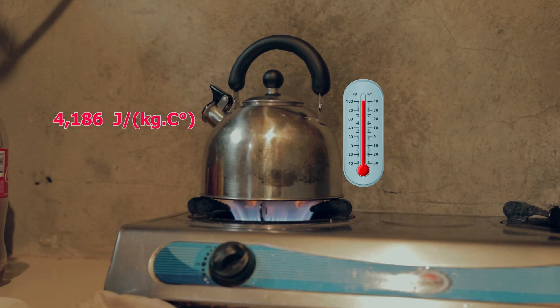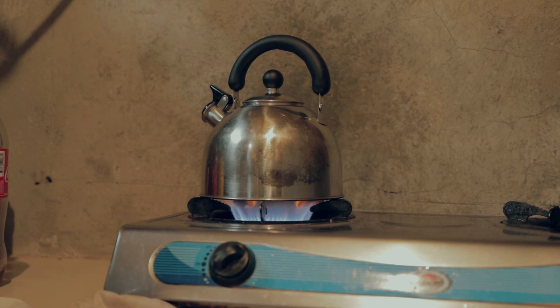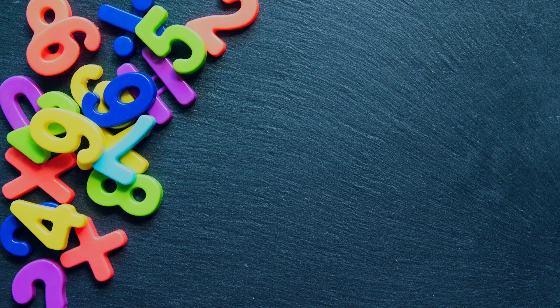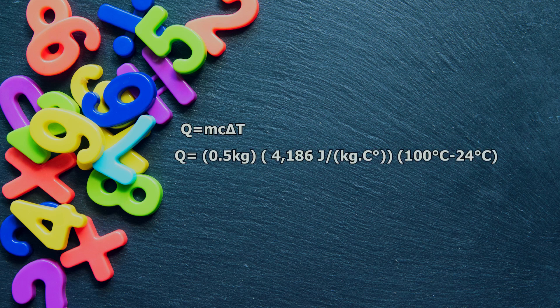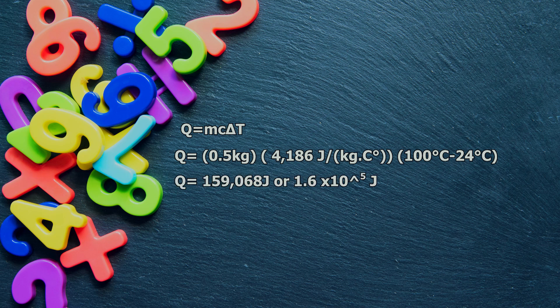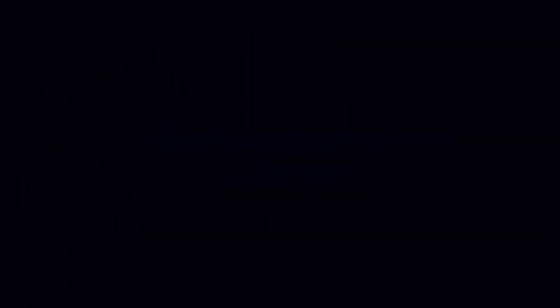To determine the energy needed to boil the water, we compute for the heat transferred by the fire to the water using the formula Q, which is the amount of energy, is equal to M, the mass of the substance, times C, the specific heat capacity of the substance, times delta T, which is the change in temperature. By solving the given values, we can obtain 159,068 J, or 1.6 times 10 raised to the fifth power J, which is needed to boil the water.